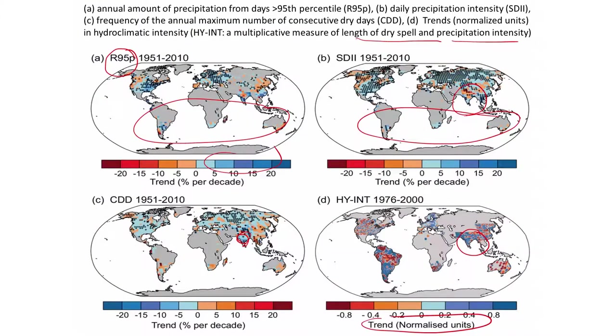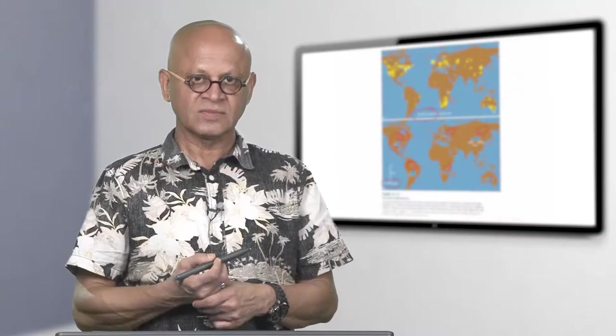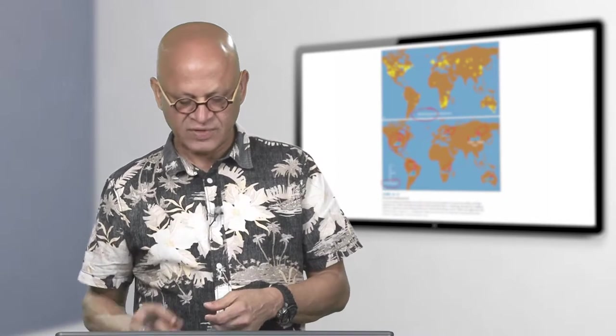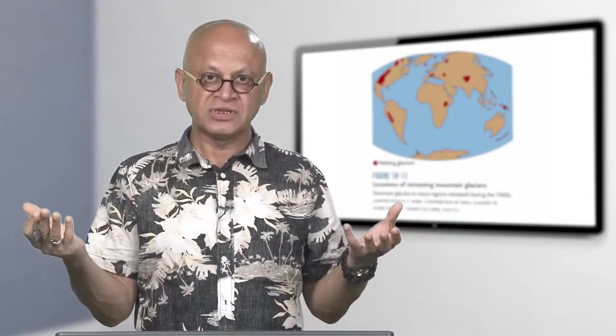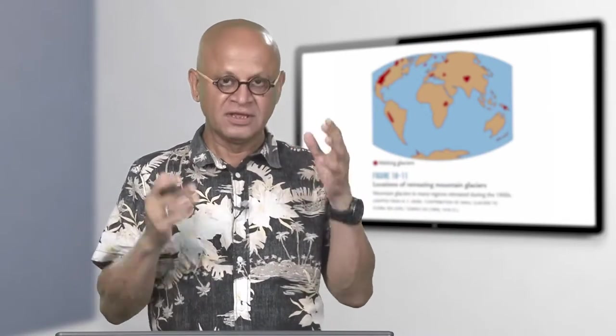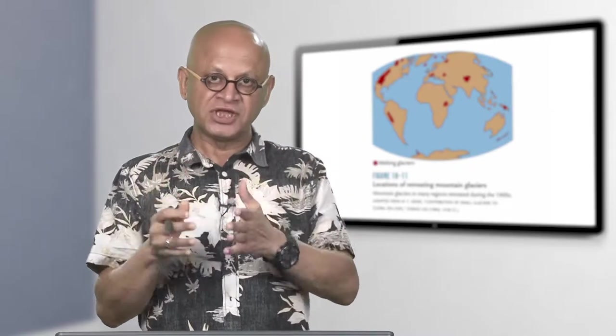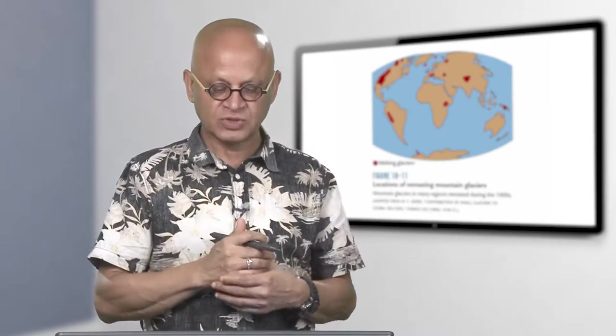Again look at all the spotty distributions. That is always something very typical of rainfall. You expect that as warming happens there will be more moisture in the atmosphere and instabilities may build, but the rainfall distribution changes and the intensity duration and frequency also change.